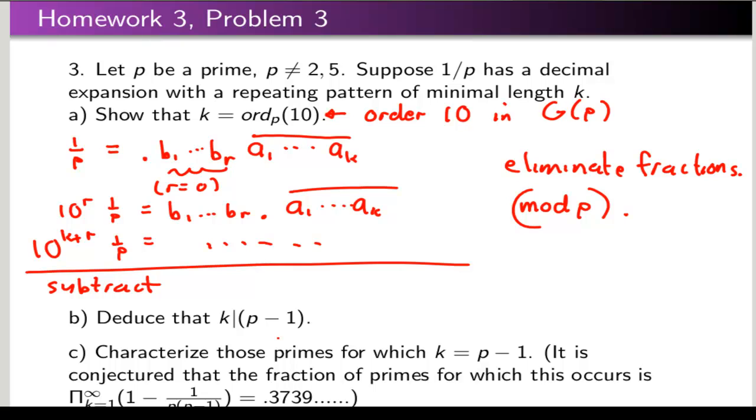Then deduce that k is a divisor of p minus 1. That's an order of some element. So we have a general fact about any group. If you have an element of that group, then the order of a is a divisor of the order of the group g. That was a consequence of Lagrange's theorem. Part c: characterize those primes through which the order is in fact p minus 1. What am I looking for here? Just make some statement that involves the word primitive root. Just a brief little statement here. It has something to do with the concept of primitive root that I'm looking for.